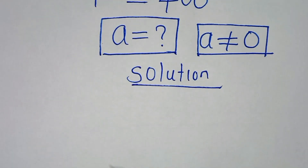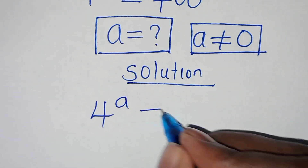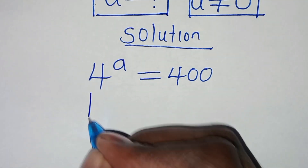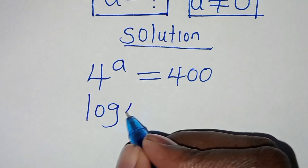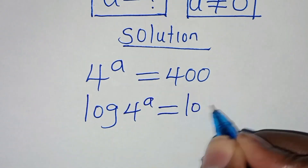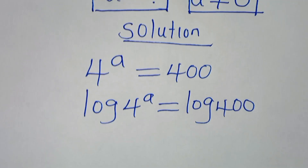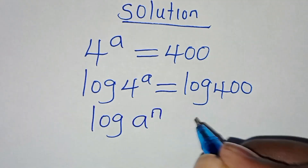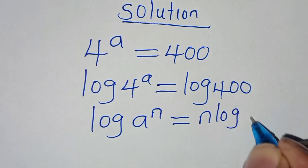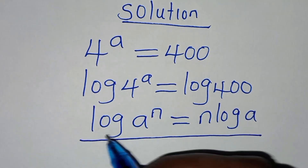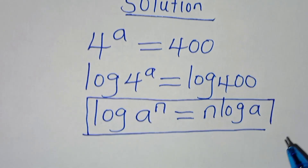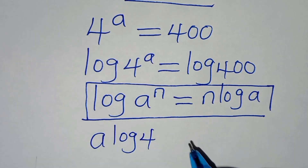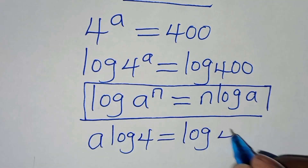We have 4 to the power of a equals 400. To solve for the value of a, we introduce a logarithm on both sides. So we have log of 4 to the power of a equals log 400. Since log 4^a is in the form log(a^n), which we can express as n·log(a), applying this power rule property, log 4^a becomes a·log 4, which is equal to log 400.